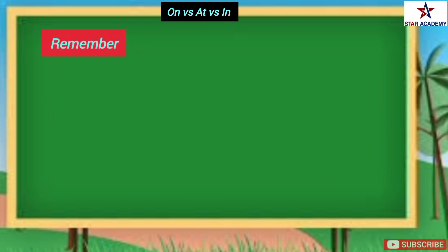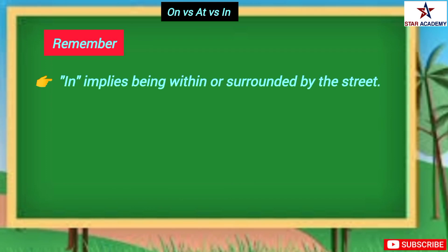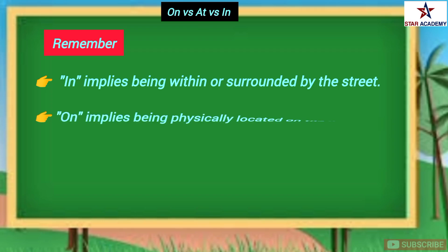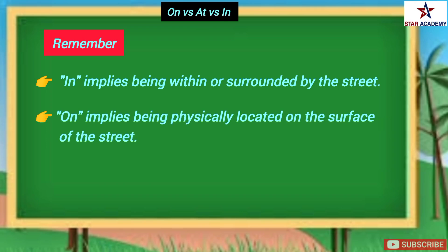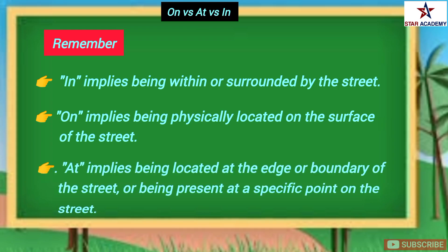Remember that 'in' implies being within or surrounded by the street. 'On' implies being physically located on the surface of the street, and 'at' implies being located at a specific point on the street.